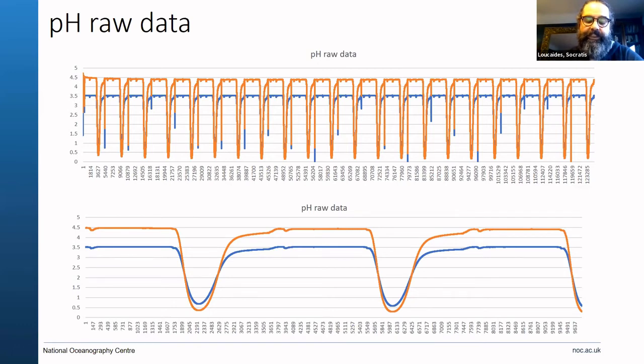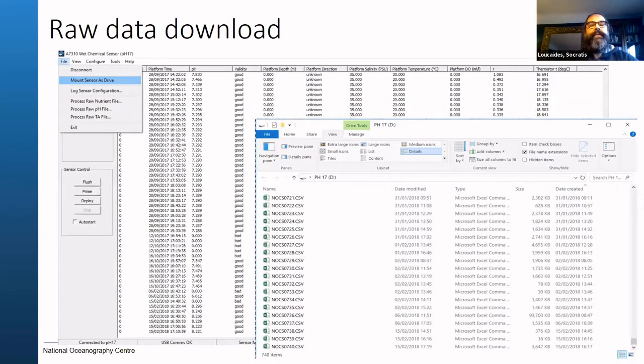So at the end of each deployment, what we do is that we go and plug in our sensor to the computer. And then we click an option on the software that says mount sensor as drive. And when we do that, the computer recognizes our sensor as a USB drive. And it opens a window with all the files collected by the sensor. So the memory of the sensor is quite huge. So we never delete these data files. But good practice is to take the last file, the deployment file, and then copy it on your computer.